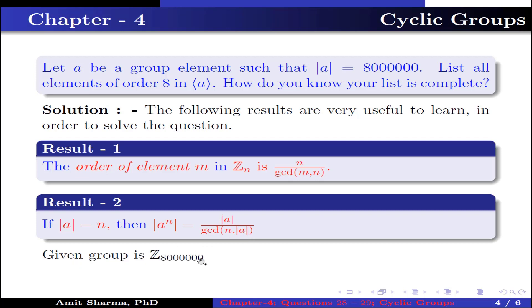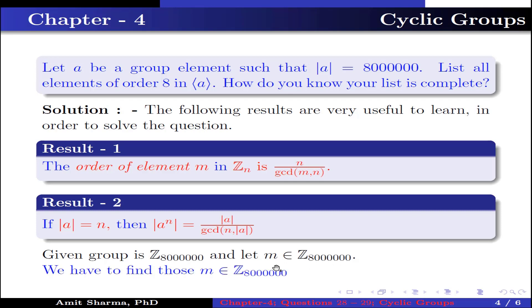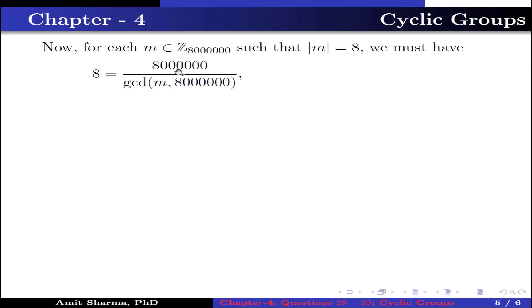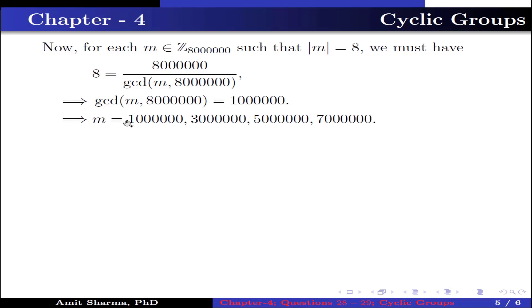Now the given group is Z_800000 and let m belong to Z_800000. We have to find those m in Z_800000 such that the order of m equals 8. We must have 8 equals 800000 divided by gcd(m, 800000). This implies gcd(m, 800000) should equal 100000. This further implies m should be 100000, 300000, 500000, and 700000.